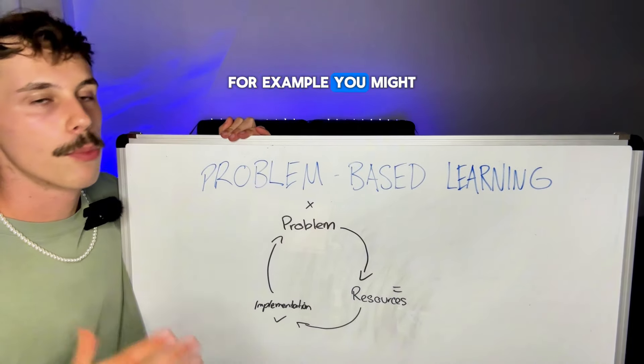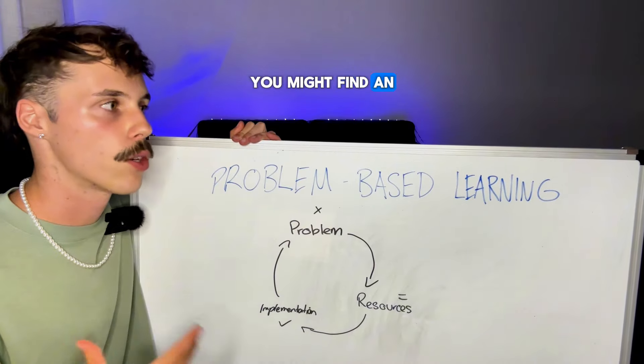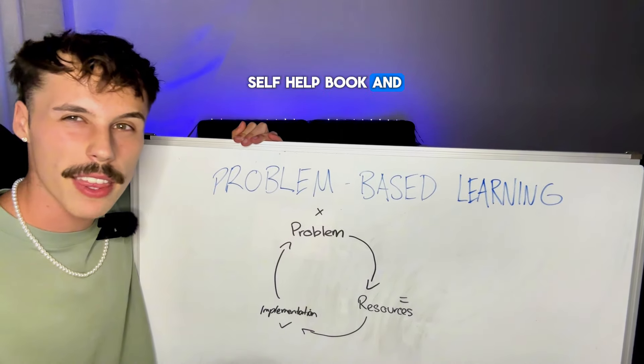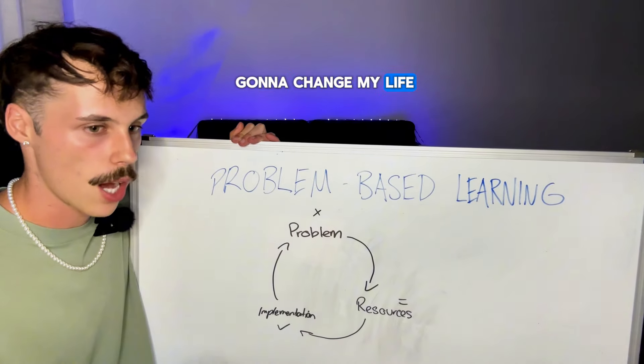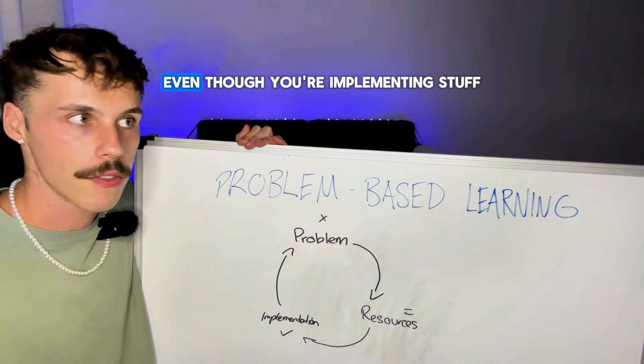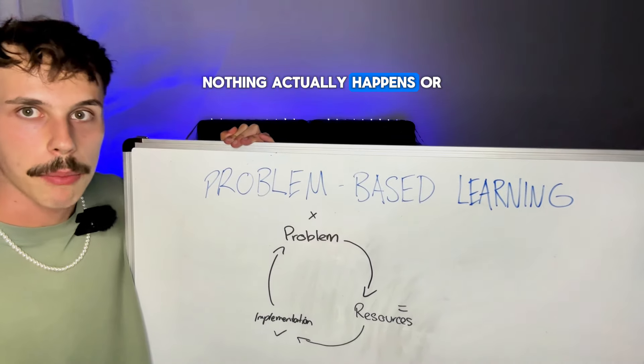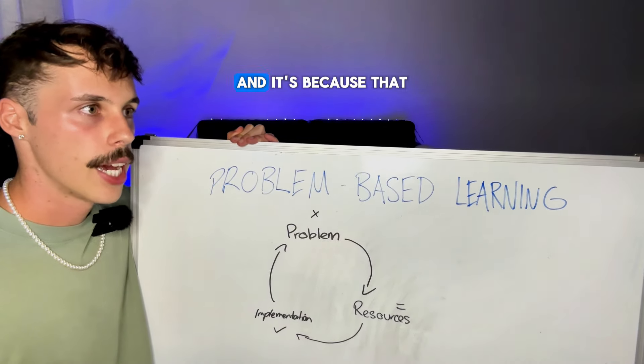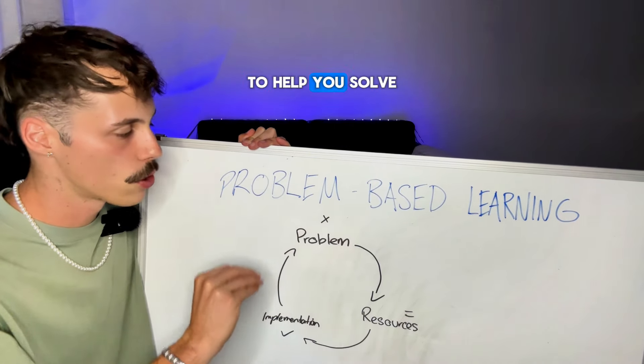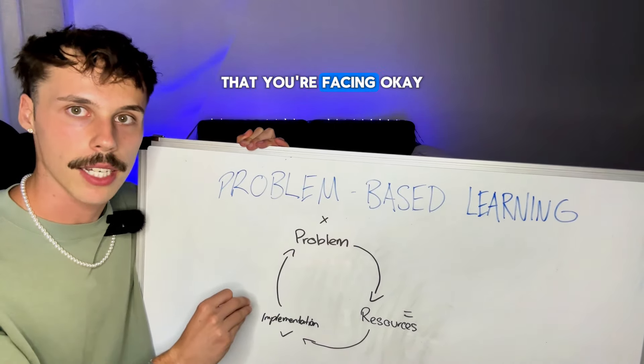For example, you might do this yourself. You might find an audio book or a self-improvement book or something like that, a self-help book and think, okay, this is awesome, it's gonna change my life. You listen to the book and nothing actually happens. Even though you're implementing stuff, nothing actually happens or changes in your life. And it's because that audio book is not specific enough to help you solve your specific problems that you're facing.